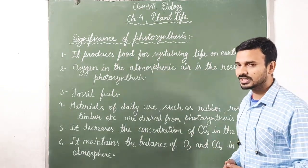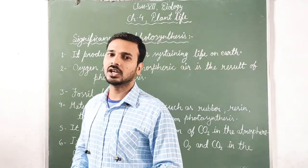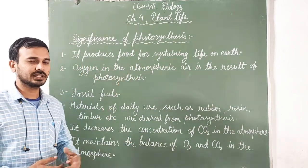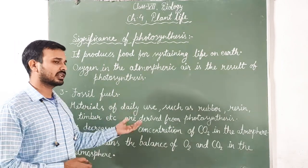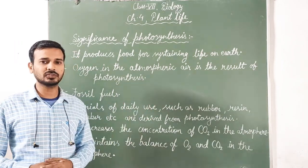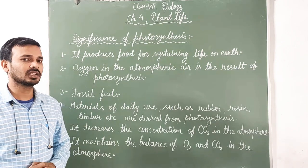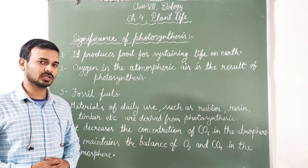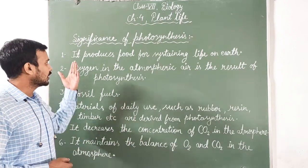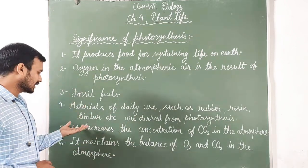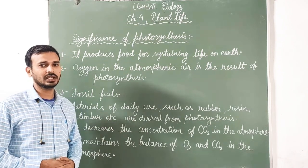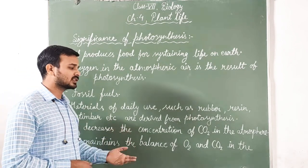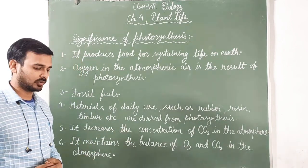Fifth, photosynthesis decreases the concentration of carbon dioxide in the atmosphere. Green plants take carbon dioxide from the atmosphere and convert it into food, releasing oxygen as a byproduct into the atmosphere. Sixth, photosynthesis also maintains the balance of oxygen and carbon dioxide in the atmosphere.